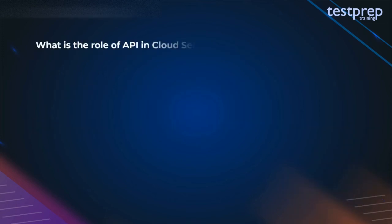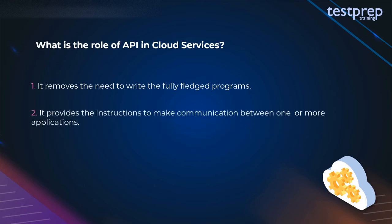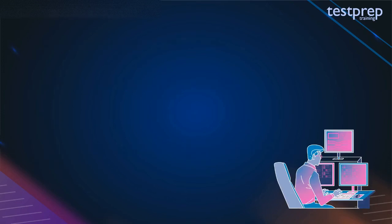Question 33: What is the role of API in cloud services? An Application Programming Interface (API) is useful in cloud platforms as: first, it removes the need to write fully fledged programs; second, it provides instructions to make communication between one or more applications; third, it allows easy creation of applications and links cloud services with other systems.